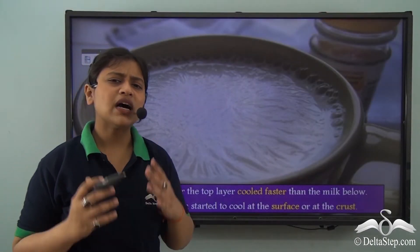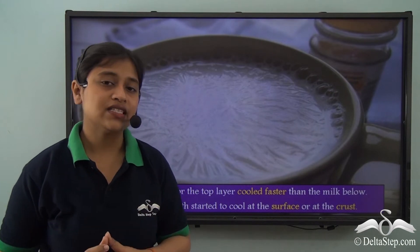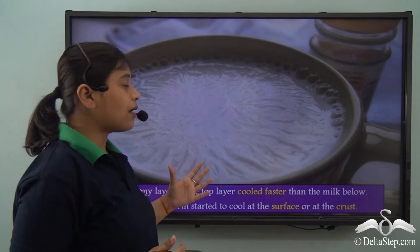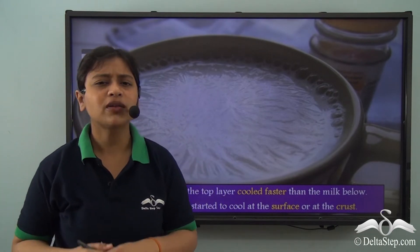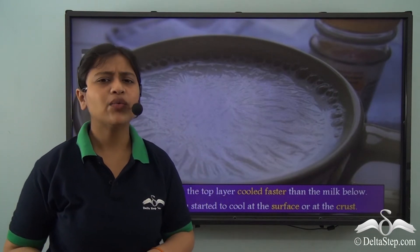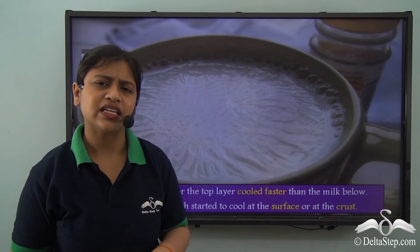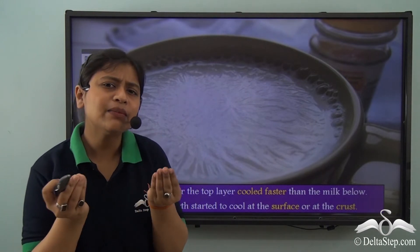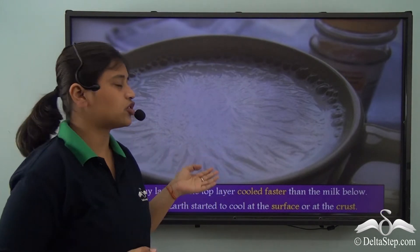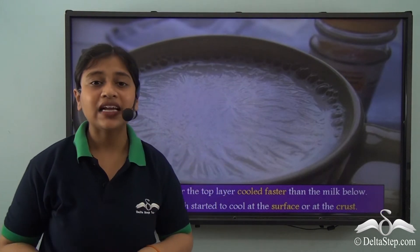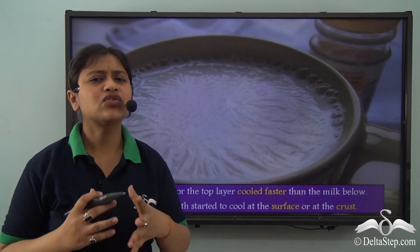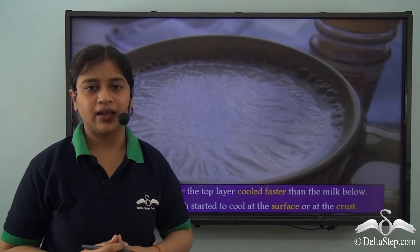You must have noticed that keeping a cup of hot milk will eventually lead to the formation of a creamy layer on the top. This happens when you let it cool for some time.